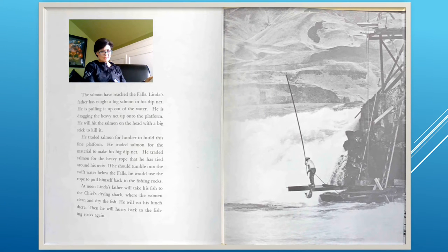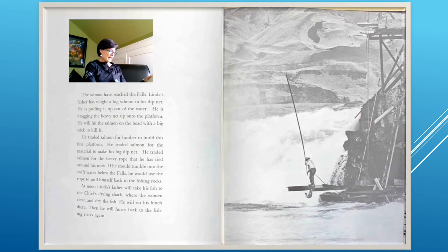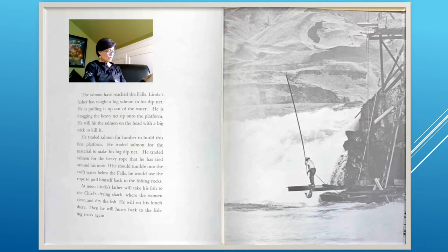The salmon have reached the falls. Linda's father has caught a big salmon in his dip net and is pulling it up out of the water. He will hit the salmon on the head with a big stick to kill it. He traded salmon for lumber to build his platform, for material to make his dip net, and for the heavy rope tied around his waist. If he should tumble into the swift water, he would use the rope to pull himself back. At noon, he will take his fish to the chief's drying shack before hurrying back to the fishing rocks.